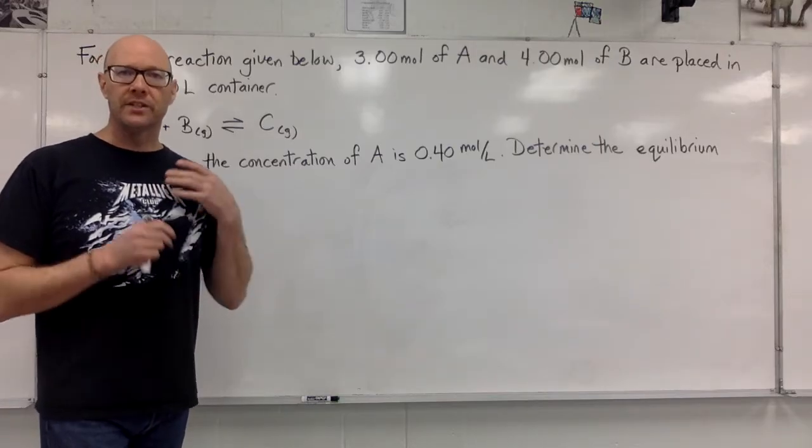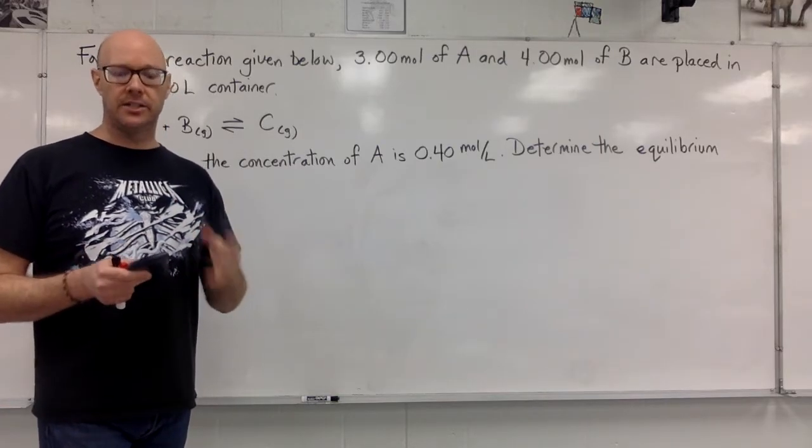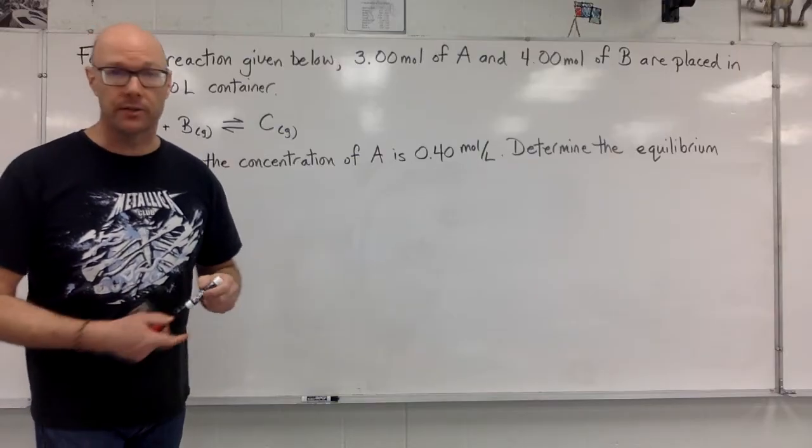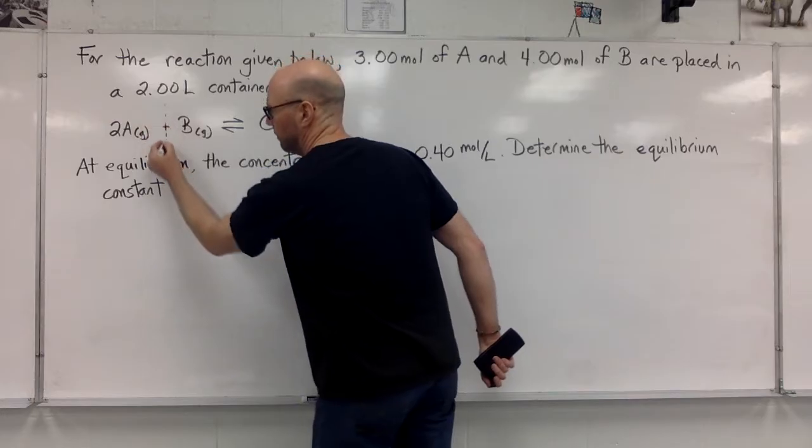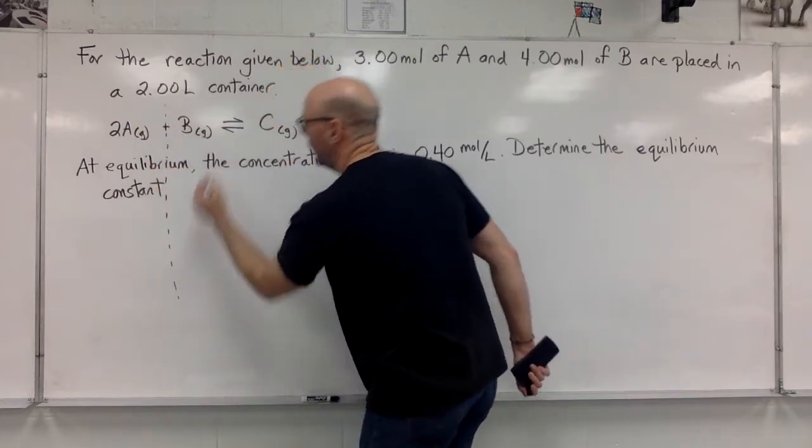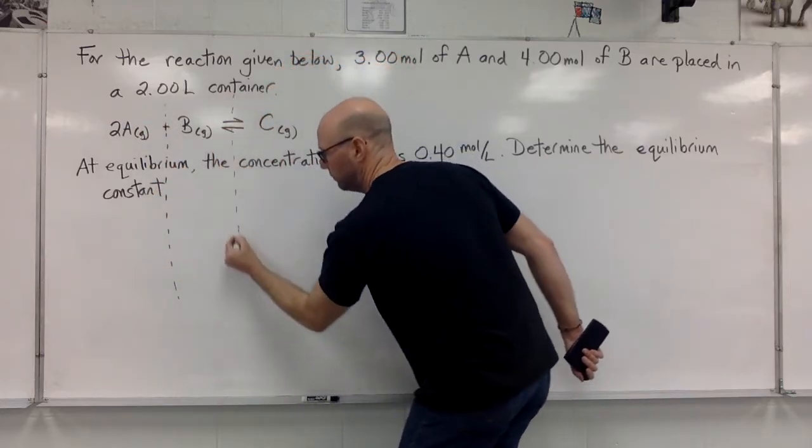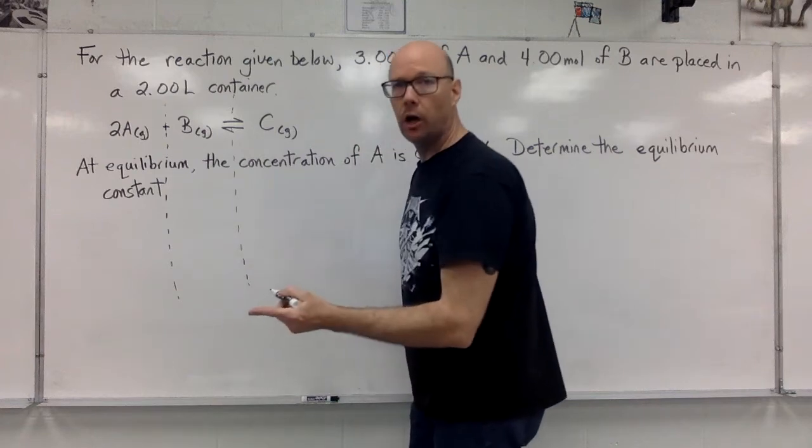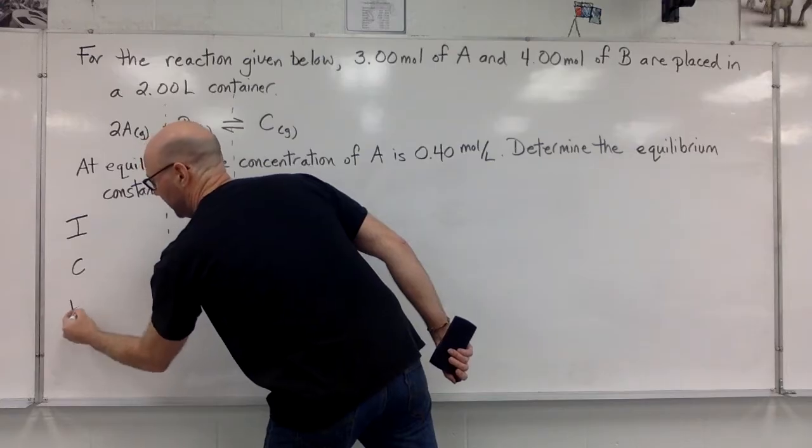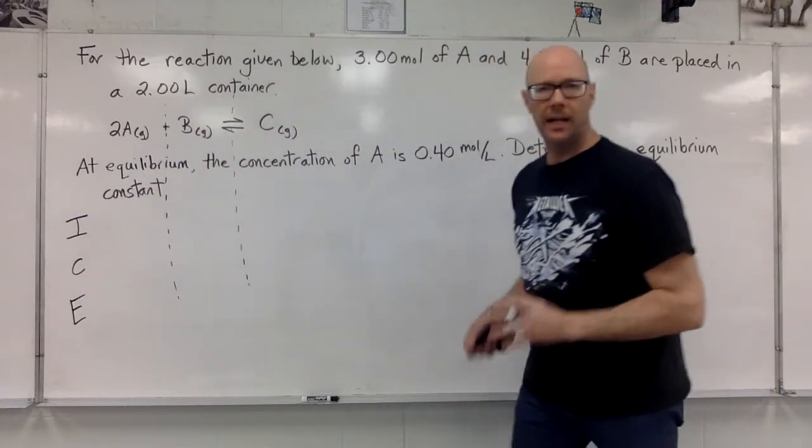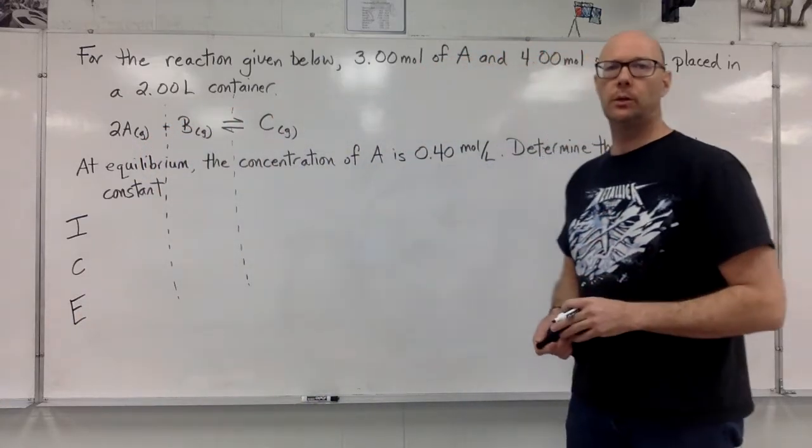Once we do that, we can start immediately to set up the equation for an ICE box. I like to imagine that the equation itself is divided into columns. And I put that I, C, E there. Initial, change, equilibrium.